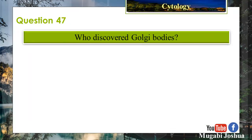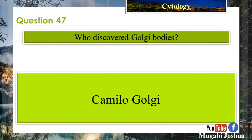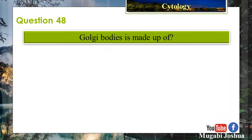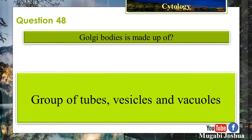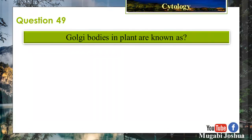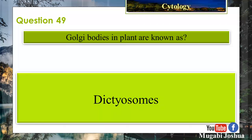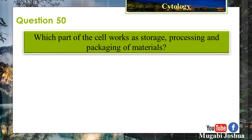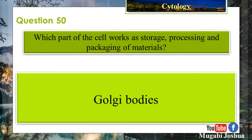Question 47: Who discovered Golgi bodies? Camillo Golgi. Question 48: Golgi bodies are made up of a group of tubes, vesicles, and vacuoles. Question 49: Golgi bodies in plants are known as dictyosomes. Question 50: Which part of the cell works as a storage, processing, and packaging centre for materials? Golgi bodies.